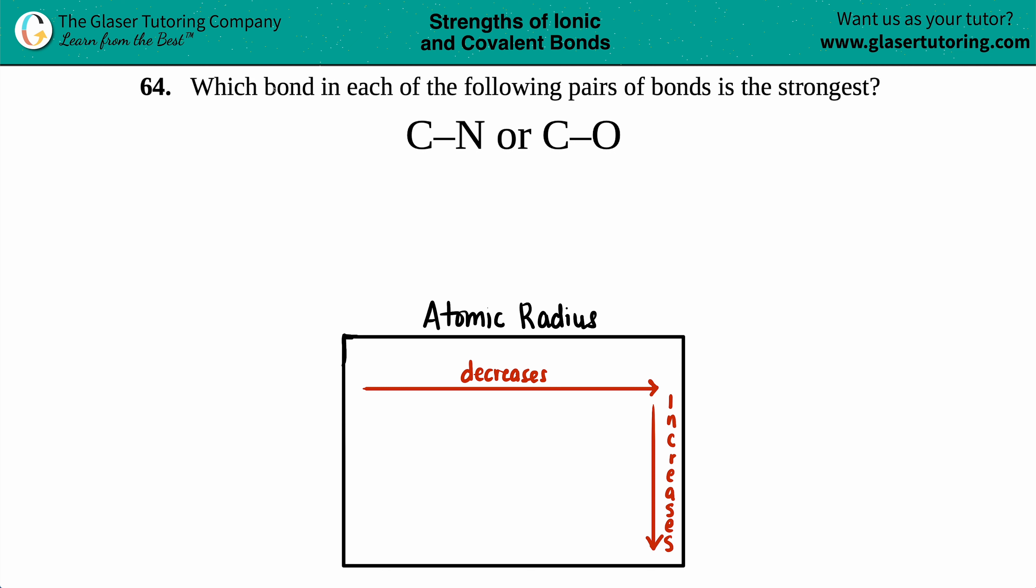Number 64: Which bond in each of the following pairs of bonds is the strongest? So is a C single bond to N stronger, or a C single bond to O stronger? Well, in this type of question we really got to get down to what is the difference between these two types of bonds.